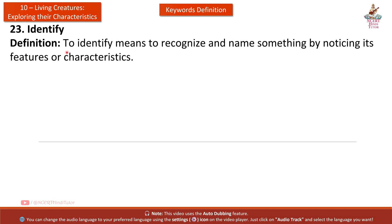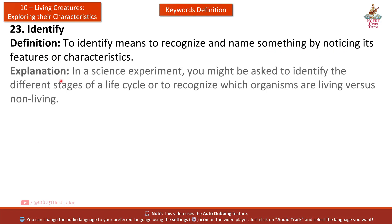Twenty-third: Identify. Definition: To identify means to recognize and name something by noticing its features or characteristics. Explanation: In a science experiment, you might be asked to identify the different stages of a life cycle, or to recognize which organisms are living versus non-living.